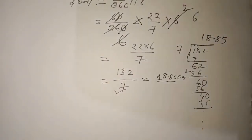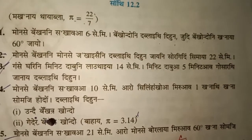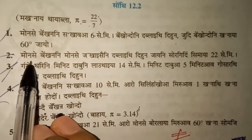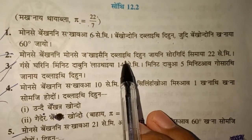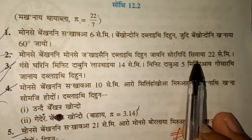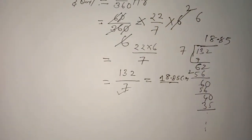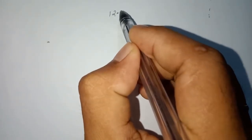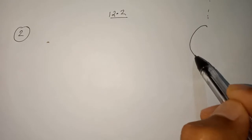Now the next question. We have a question where the circumference is 22 centimeters. Let us see how we solve this. We have Exercise 12.2 again, and the given data is that the circumference equals 22 cm.